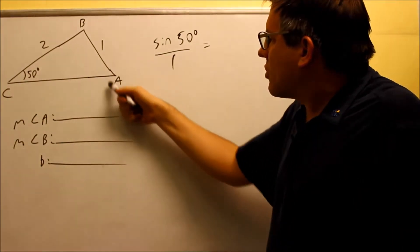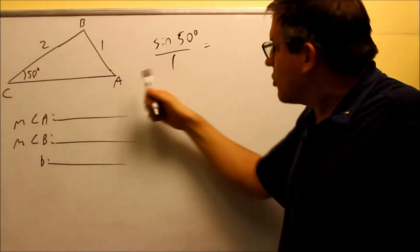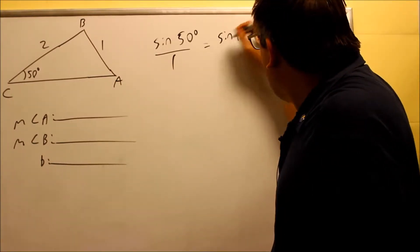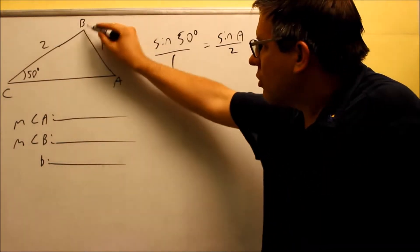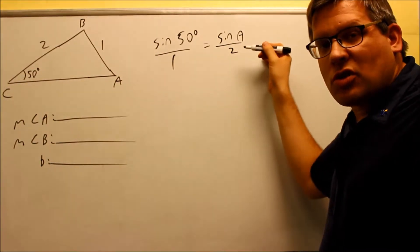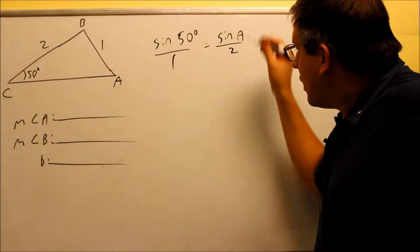We only have enough information to solve for angle A, so we're going to do sine A over 2. We don't have enough information with B, so the only one we can attempt to solve for is going to be angle A.